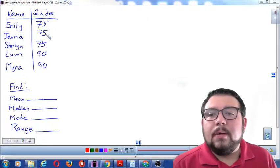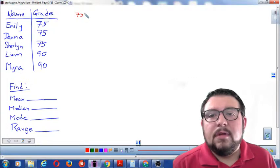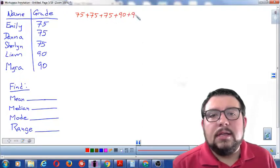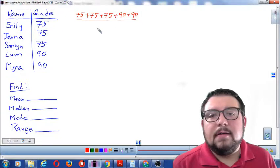Alright, so to find the mean, you add up all the numbers in a set of data, and you divide by the number of numbers. So, that's exactly what we'll do. We're going to do 75 plus 75 plus 75 plus 90 plus 90, and then we're going to divide by 1, 2, 3, 4, 5.